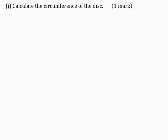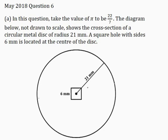Part 1: Calculate the circumference of the disk, for one mark. The circumference is given by the formula C equals 2 pi R. From our diagram, the radius is 21 mm, and we are told to take pi to be 22 over 7.